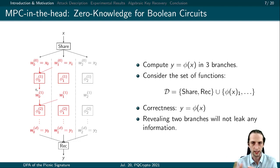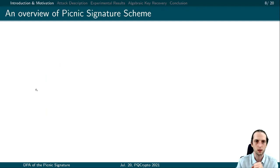In Picnic's case, this phi function is selected as LowMC, which inputs the same plaintext and the same secret key for each repetition.